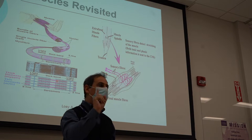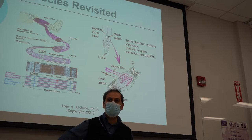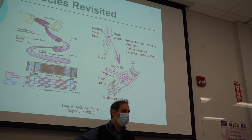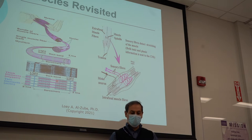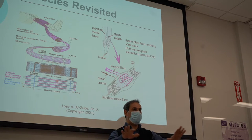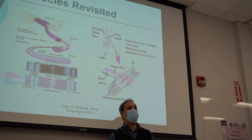So one motor nerve coming from the spinal cord, and all the cells that it touches with its dendrites, is called the motor unit.